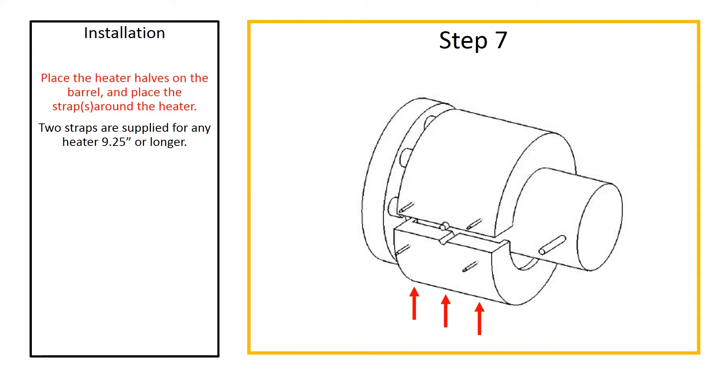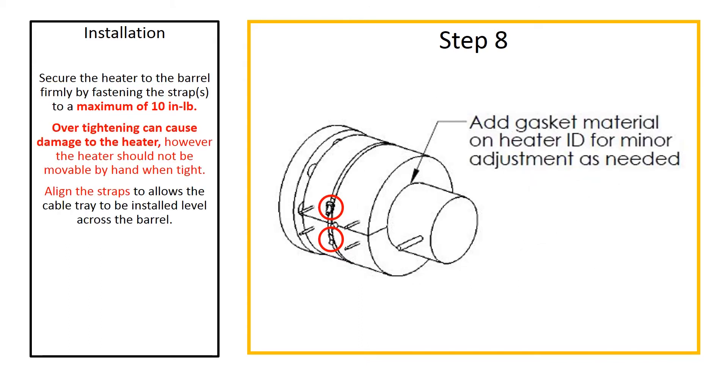After you have created the thermocouple penetration on both halves, place the heater halves on the barrel, thread the strap through the junction box, and place the strap around the heater. Secure the heater to the barrel firmly by fastening the strap to a maximum of 10 inch pounds. Over tightening can cause damage to the heater.